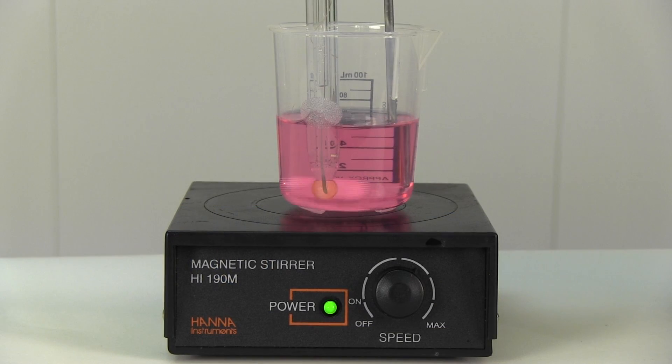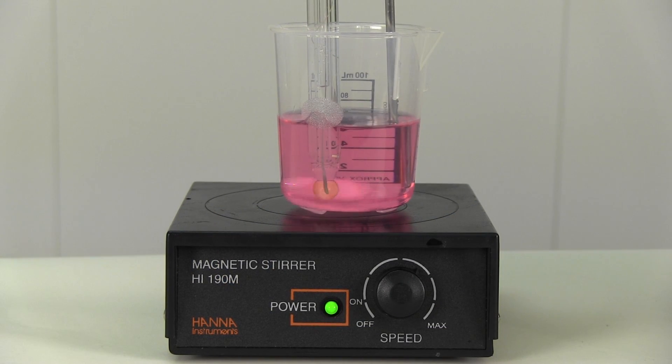Next, we need to determine the slope of the pH electrode. In order to calculate slope, you need two values, so we need to take a second millivolt reading using a second different buffer.